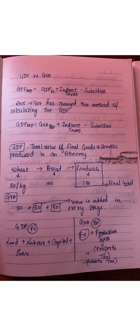In 2015, the government changed the method to calculate GDP. The old approach used factor cost; the new approach uses GVA at basic prices. GDP at market price is the current formula, and GVA at basic price has replaced the factor cost approach.